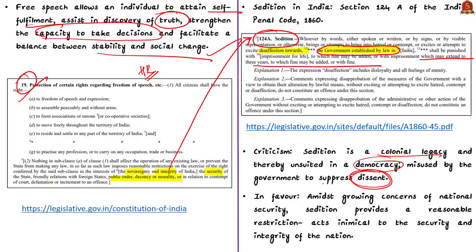It is also argued that amidst growing concerns of national security like separatism, naxalism, maoism, and communalism, sedition proves a reasonable restriction on Article 19 for the security and integrity of the country. If properly used, sedition can be an effective tool in curbing naxalism, maoism, and separatism, thereby protecting the integrity of the country.